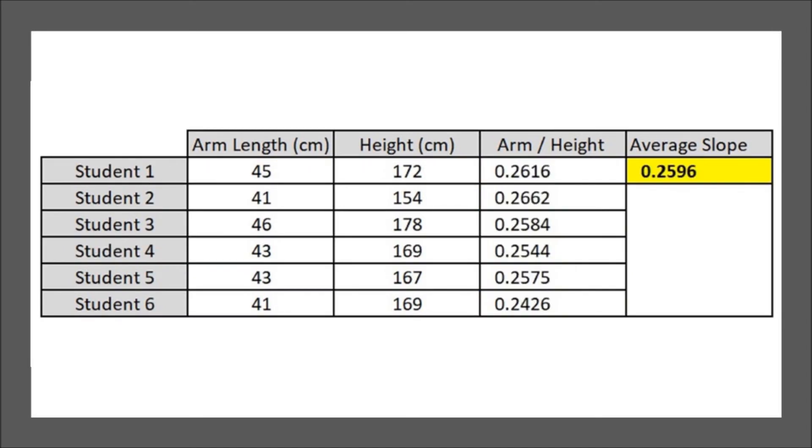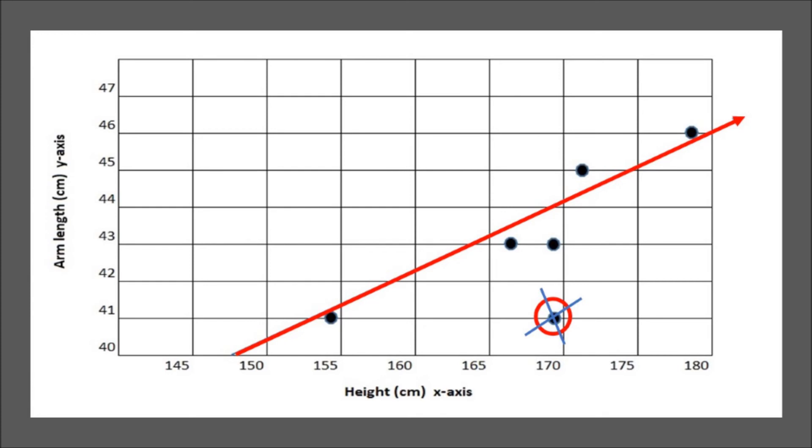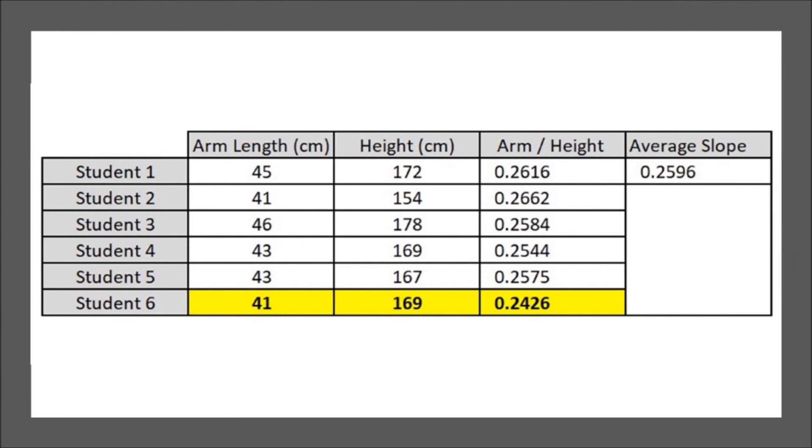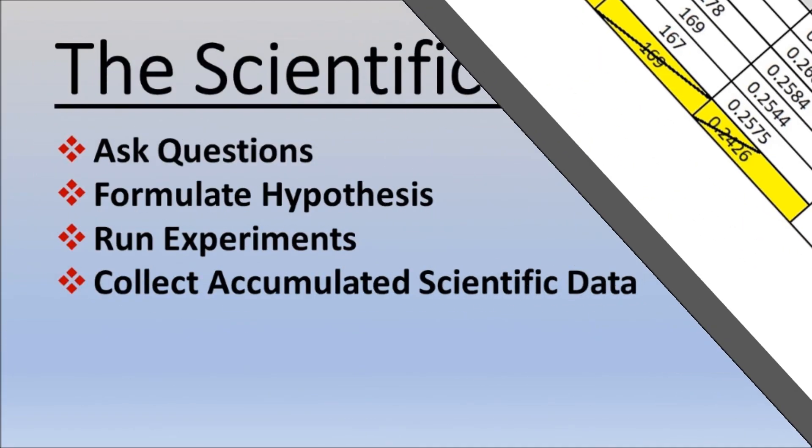Here is our average slope value. Now let's go back to our graph. Here's one of our best fit lines. Notice how everything is close to that line except for this point. With this being such an anomaly compared to all the other ones, we may just remove that from our data.